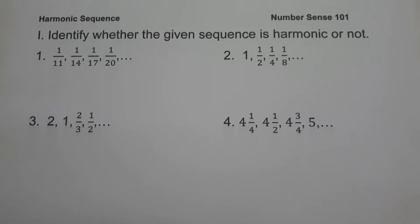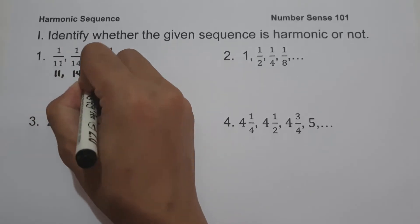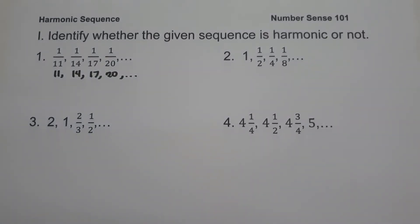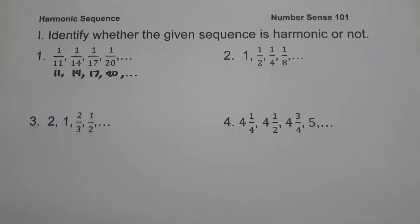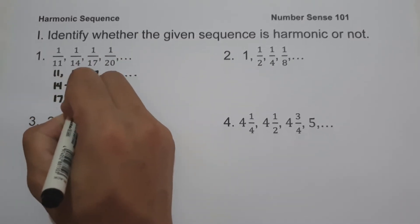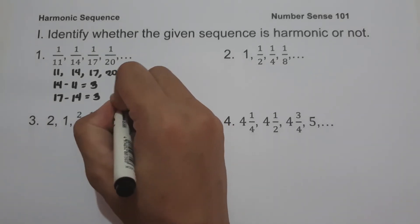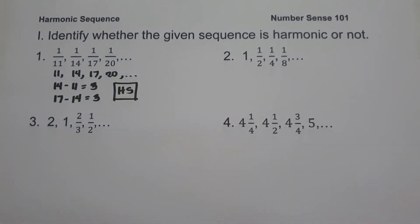On our first set of examples, we are going to identify whether the given sequence is harmonic or not. On number 1, we have 1/11, 1/14, 1/17, 1/20. The first thing to do is find the reciprocals: 11, 14, 17, 20. The common difference is 14 minus 11 equals 3, and 17 minus 14 equals 3. Since we have a common difference, the sequence on number 1 is an example of a harmonic sequence.